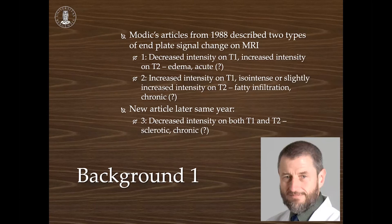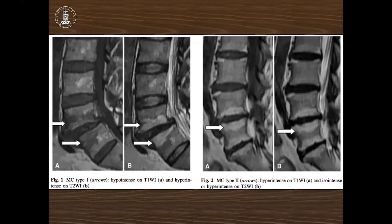These are the images from his article, with T1 and T2 sagittal MRI images describing changes near the end plate in the lumbar spine, mostly located in the L4-L5 or L5-S1 segments. Type 1 on the left is thought to represent edema, and Type 2 on the right is a later fatty infiltration. They did biopsies on only seven patients — that's all we have of biological material. It has since been accepted as fact that Type 1 is edema and Type 2 is fat, with a sharp transition between them.